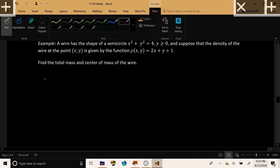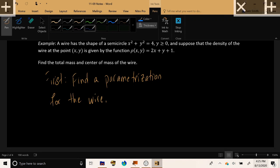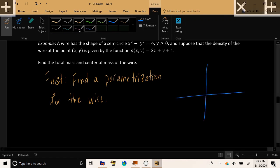Before we do anything, first, we need to find a parametrization for the wire, just as we did back in Calculus 3. So, let's sketch the wire, which consists of the circle of radius 2, drawn for y greater than or equal to 0.